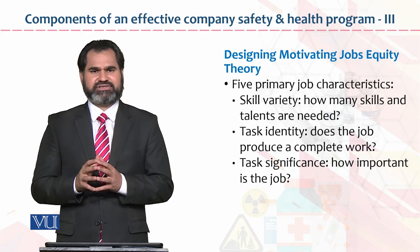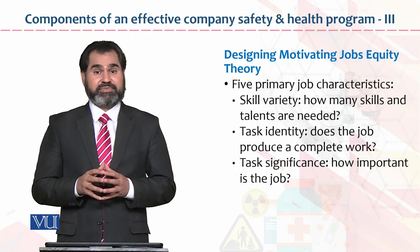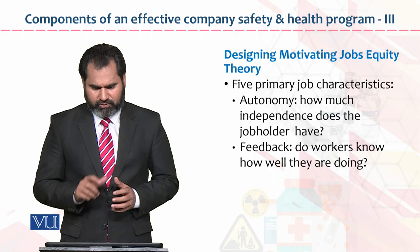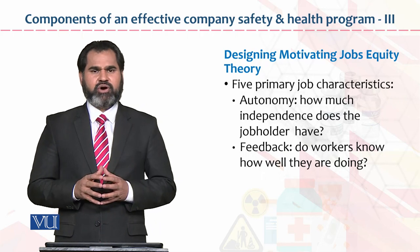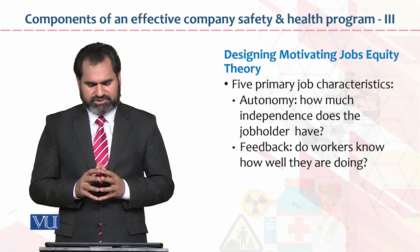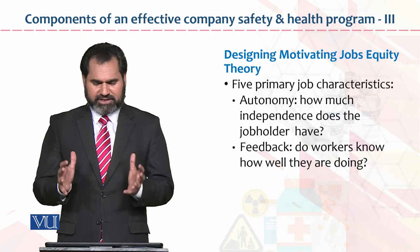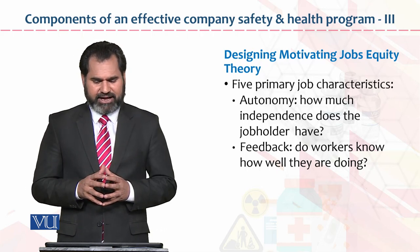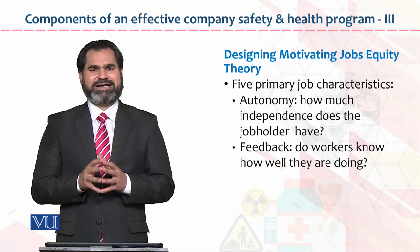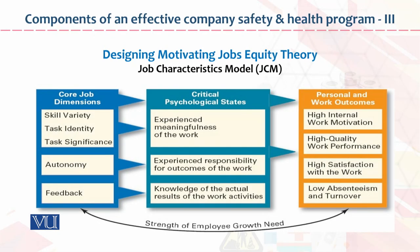Five primary job characteristics: skill variety, task identification, task significance — phir hum teen ko discuss karte hain. Skill variety — how many skills imply has. Task identity — does the job produce a complete work. Task significance — how important is the job for the employee. Fourth one: autonomy — how much employees are free to perform their job. And the last one is feedback — do workers know how well they are doing. In paanch cheezon ko hum log bolte hain five primary job characteristics.